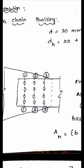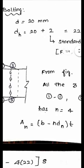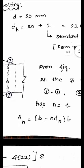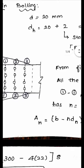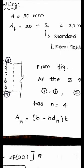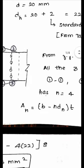We can calculate for any one path since they are all similar. From figure 1, all the paths have the same number of holes, which is 4. To calculate the net area, the formula is: An = (B minus N×Dh) into T, where B is the width of the plate, N is the number of bolt holes in the considered path, and Dh is the diameter of the hole, which is 22 mm.